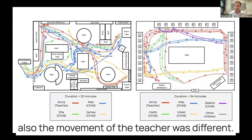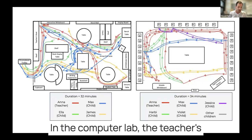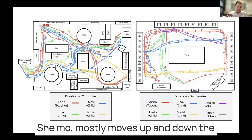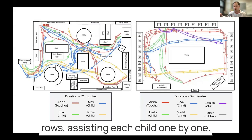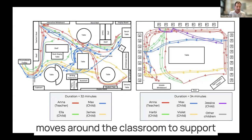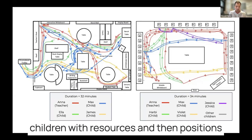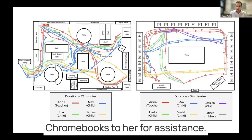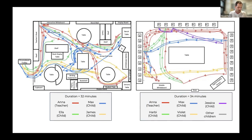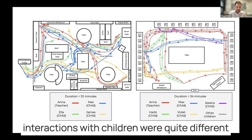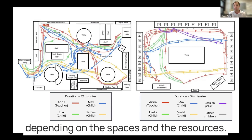The movement of the teacher was also different. In the computer lab, the teacher's movements are quite sequential — she mostly moves up and down the rows, assisting each child one by one. In the classroom, she initially moves around to support children with resources, then positions herself in one spot for the rest of the lesson, and children bring their Chromebooks to her for assistance. The movement maps showed that teacher interactions with children were quite different depending on the spaces and the resources.